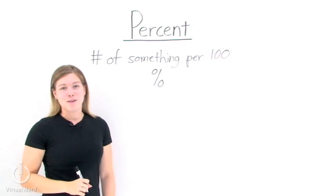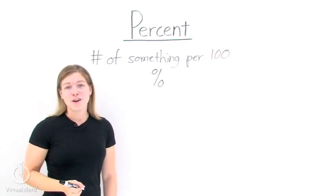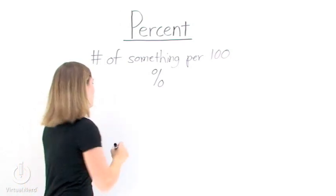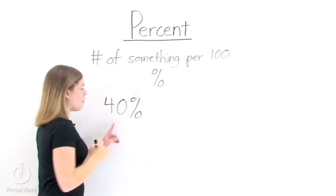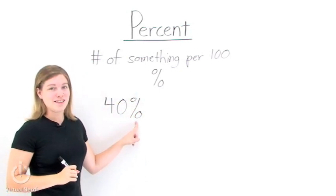Say you want to buy a new calculator. You go to the store and the calculator is 40% off. Well, that percent looks like this. The number 40 followed by our percent symbol.